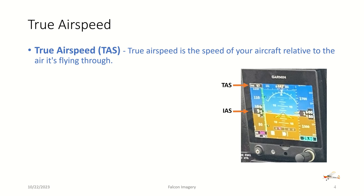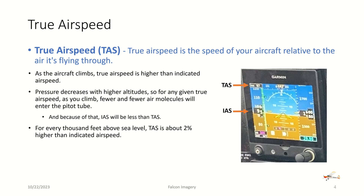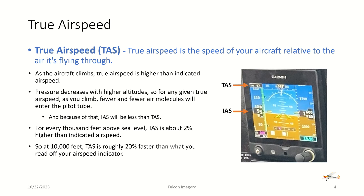True airspeed is the speed of your aircraft relative to the air it's flying through. As the aircraft climbs, true airspeed is higher than indicated airspeed. Pressure decreases with higher altitudes, so for any given true airspeed as you climb, fewer and fewer air molecules will enter the pitot tube, and because of that, indicated airspeed will be less than true airspeed. For every thousand feet above sea level, true airspeed is about 2% higher than indicated airspeed. So at 10,000 feet, true airspeed is roughly 20% faster than what you read off your airspeed indicator.